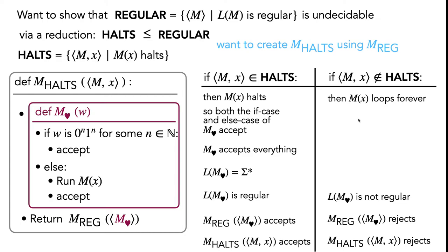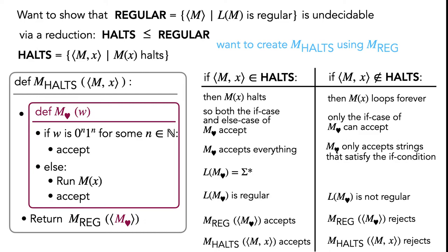Now for the other side: when mx loops forever, only the if-case of mHeart can accept. In the else-case, we run mx, which loops forever, and we never reach the accept line. That means mHeart only accepts strings of the form 0^n 1^n for n in the natural numbers, because only strings satisfying this condition reach accept. This is a well-known irregular language, which completes the rest of this proof.